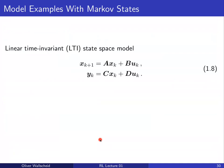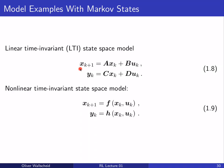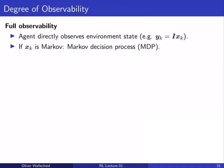Examples of systems with the Markov state characteristic include linear time-invariant state space models, where there is a linear relationship between the current and next state, and also nonlinear time-invariant state spaces — we don't need a linear relationship, just a time-invariant state space representation.